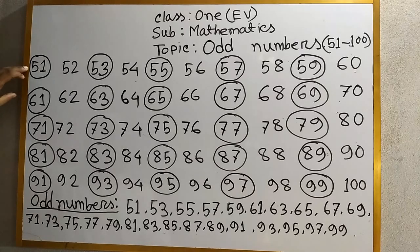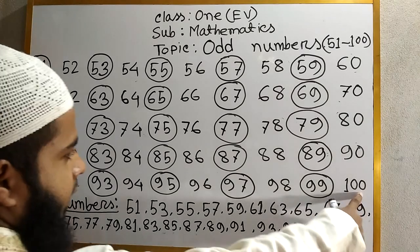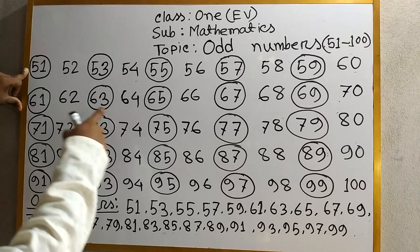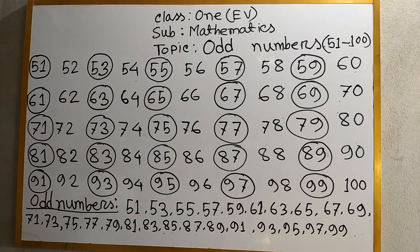I will write numbers 51 to 100 and I marked the odd numbers with a circle. I marked the odd numbers with a circle.